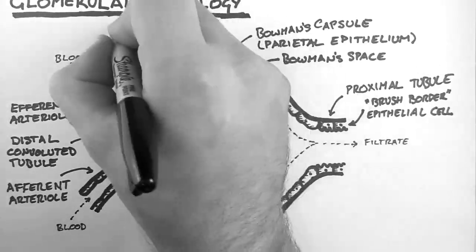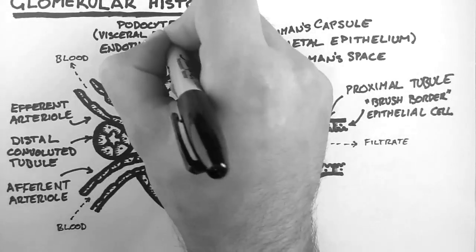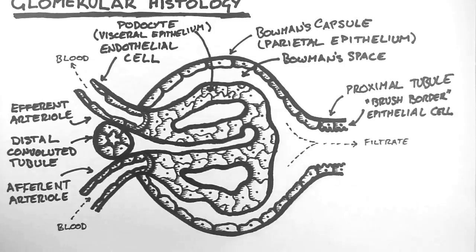Covering the capillaries, we have a cell called the podocyte. It's called a podocyte because it has feet — "pod" means foot in Greek. These are also a type of epithelium; we call these visceral epithelium. We'll talk more about them later in this tutorial.